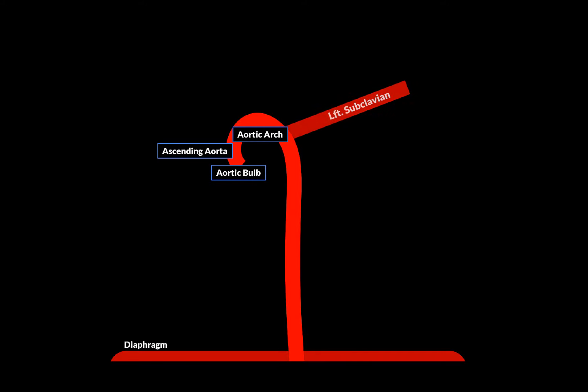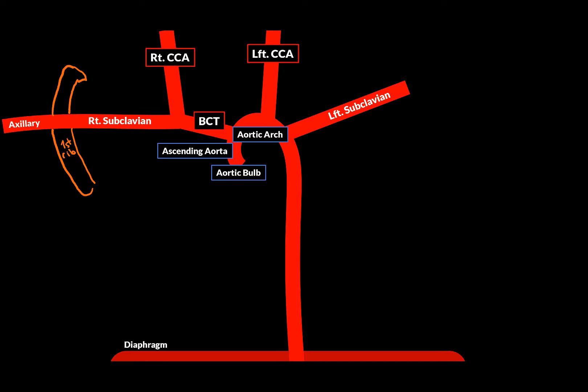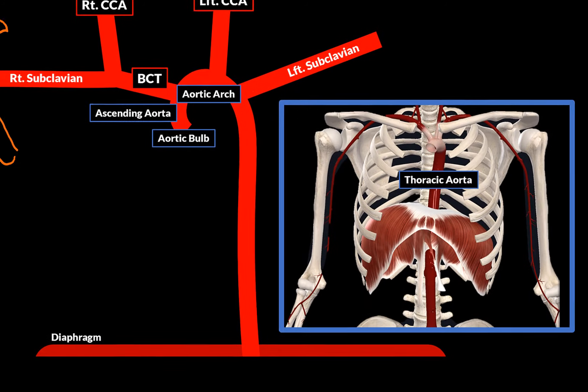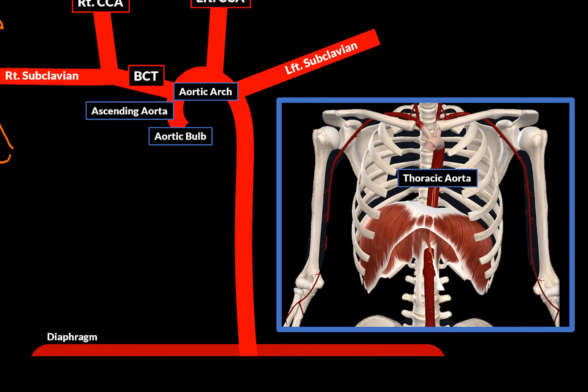The left subclavian artery, the left common carotid artery, and the brachiocephalic trunk, which divides into the right common carotid artery and the right subclavian artery, which becomes the axillary artery once it passes the first rib. After the aortic arch, it becomes the thoracic aorta, which pierces the diaphragm through a hole called the aortic hiatus, becoming the abdominal aorta.